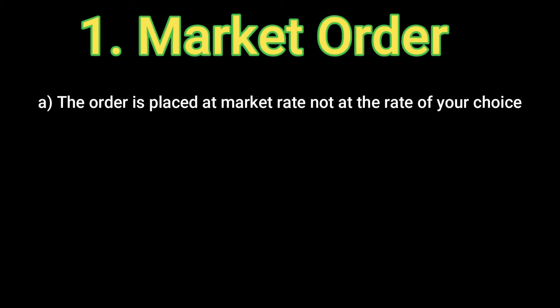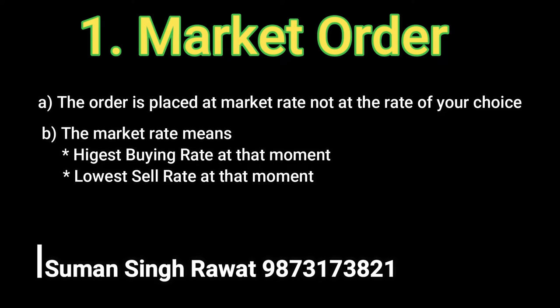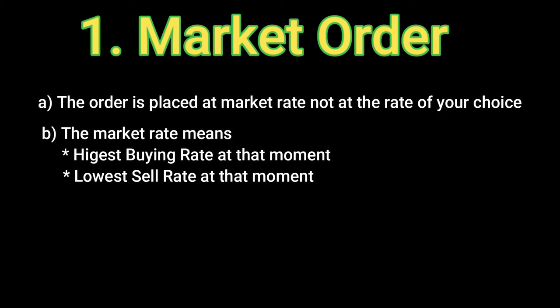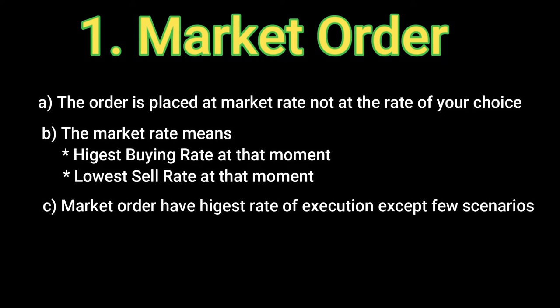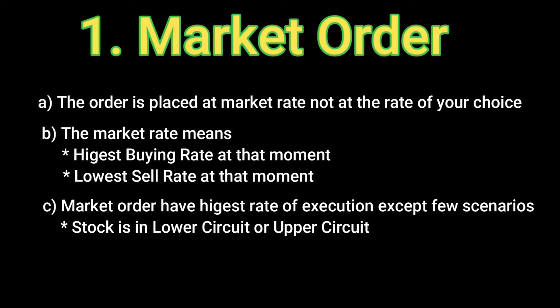Let's start with the market order. The order is placed at the market rate, not at a rate of your choice. So if you have a share trading at 10 rupees, you can buy or sell it at 10 rupees. When you place a market order, you get the highest buying rate or the lowest sell rate at that moment. The rate will generally be either the same or slightly higher when buying, and current rate or slightly lower when selling.